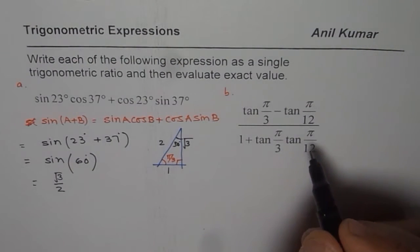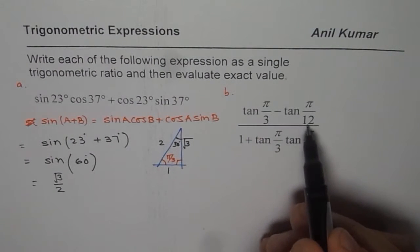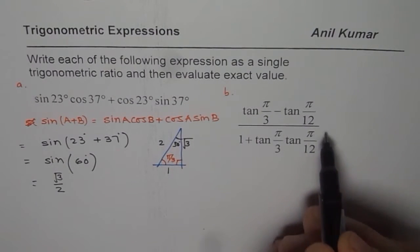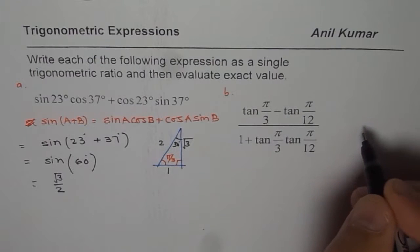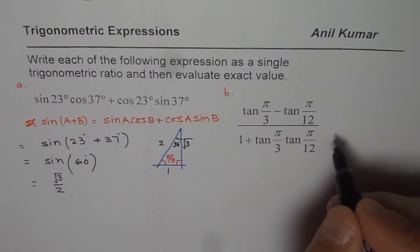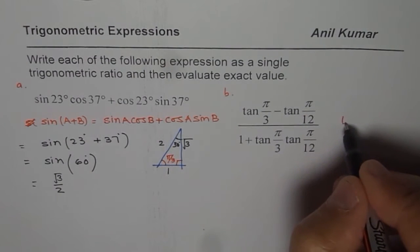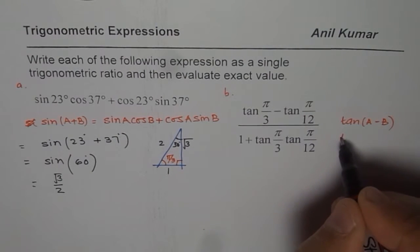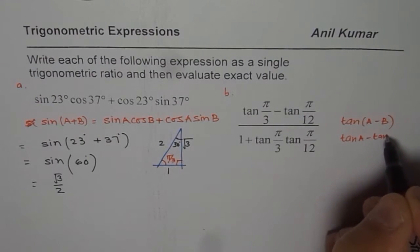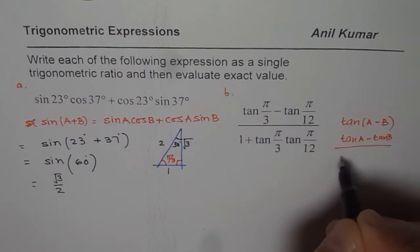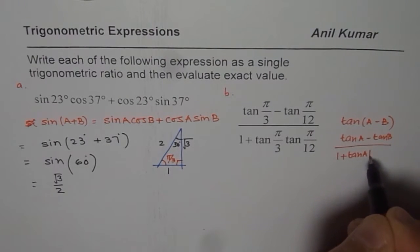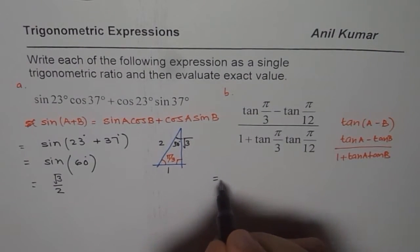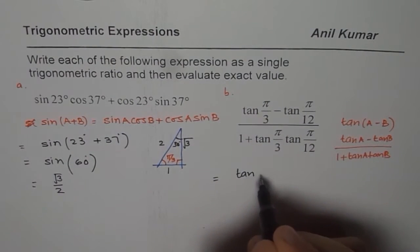Let's do the second one now, which is tan π/3 minus tan π/12 divided by 1 plus tan π/3 tan π/12. This you will recall is the same as tan(A-B). Recall the formula for tan(A-B). So tan(A-B) is tan A minus tan B divided by 1 plus tan A tan B. It is exactly the same.